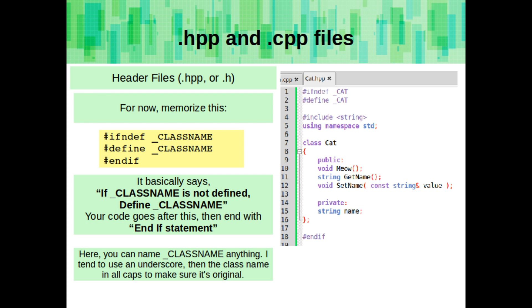and then some unique identifier, so usually I use the class name in all caps with an underscore at the beginning. It has to be unique, so there's no naming conflict. Then right below that, write pound defined, and then the same keyword, whatever you put. And then at the very end of the file, put pound end if.